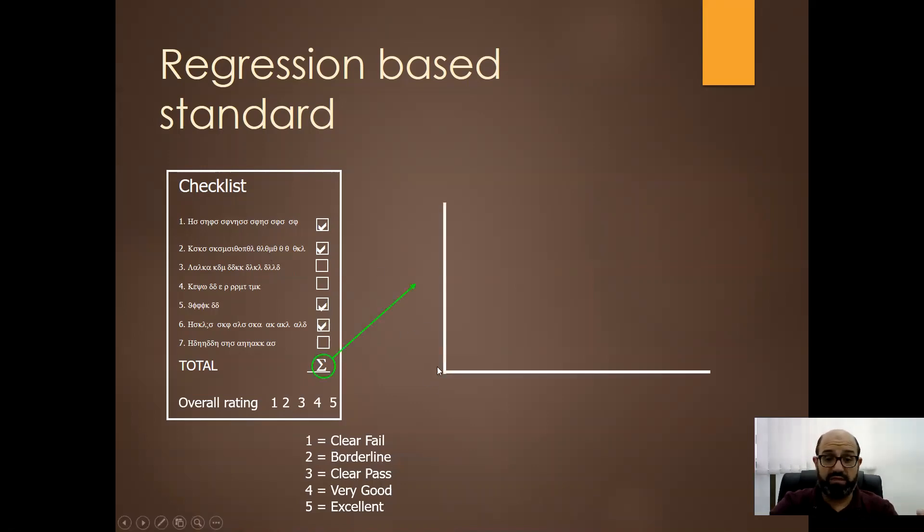However, what we do is we plot the scores of the students, the checklist score based on their overall rating or the global rating. So these are the scores for the clear failing students, the borderline, the clear passing, the very good and excellent students.